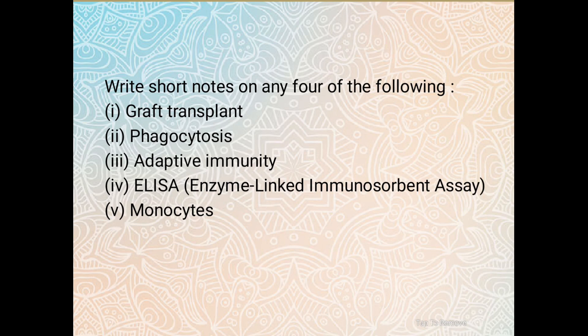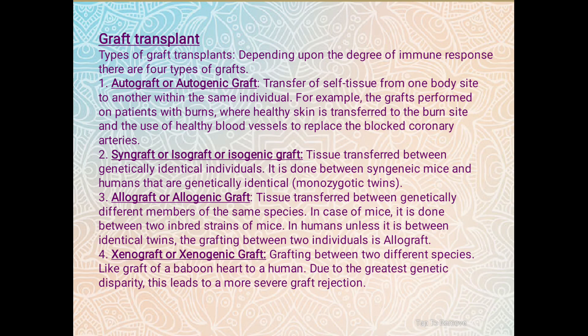The last question asks for short notes on any four of the following five options, each carrying 2.5 marks. The first short note is about graft transplant. In our body, any tissue or organ can be transplanted. Depending on the degree of immune response, there are four types of graft: Autograft, Syngraft, Allograft, and Xenograft. Autograft or autogenic graft involves the transfer of self-tissue from one body site to another within the same individual — for example, transferring healthy skin to a burn site or using a healthy blood vessel to replace blocked coronary arteries.